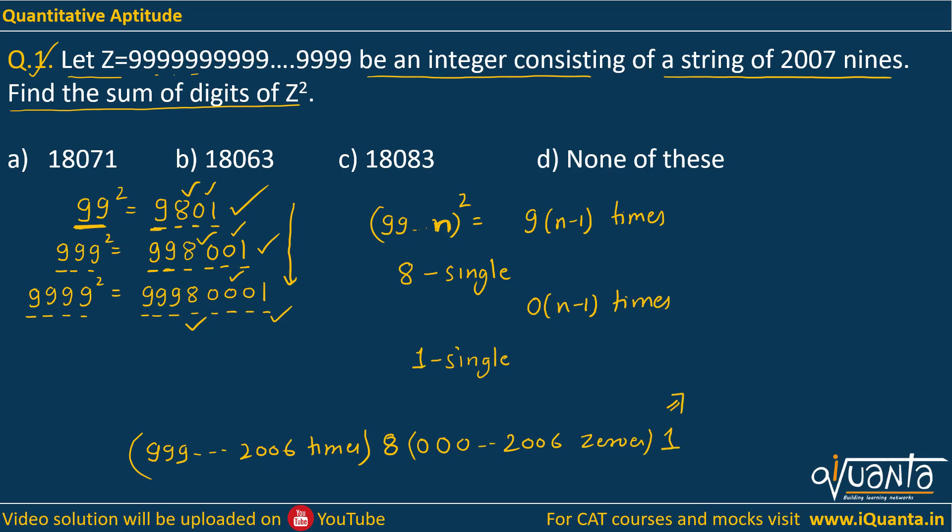We have to find out the sum of its digits. So we will multiply 2006 into 9 plus 8. We do not have to care about the zeros because their sum will always be zero. We have to care about the one in the end. So if we solve this, we will be getting 18054 plus 9, which gives me 18063. So this will be the sum of digits of Z². Option B is the correct answer. So this was very easy if you know the pattern, if you recognize the pattern.